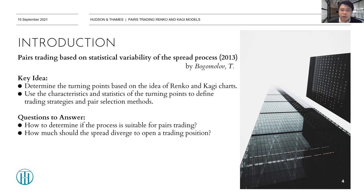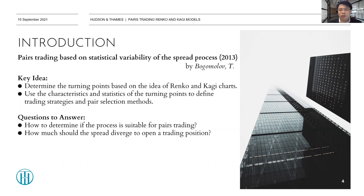To complete a pairs trading strategy, two questions need to be answered. The first is how to determine if the process is suitable for pairs trading, and the second is how much should the spread diverge to open the trading position. The paper uses the statistics of the turning points to measure the degree of mean reversion and the variability of the process to solve these two questions.